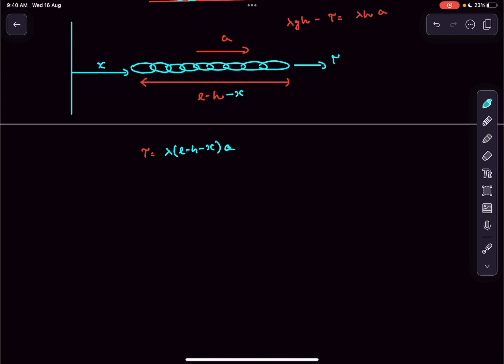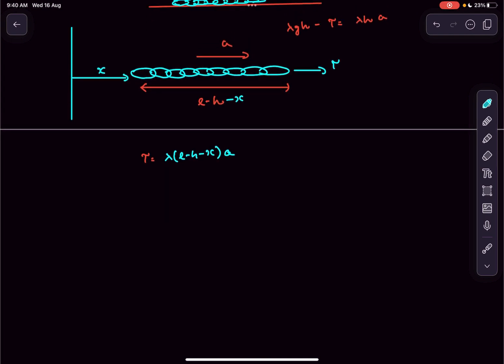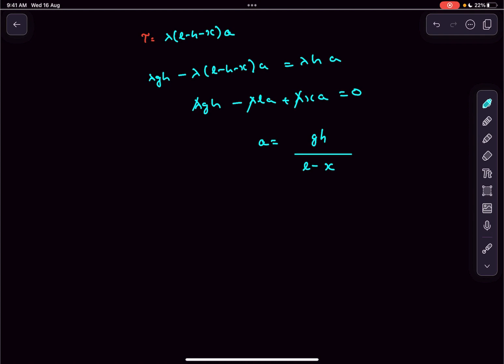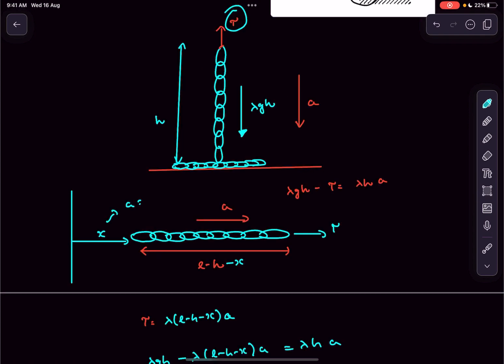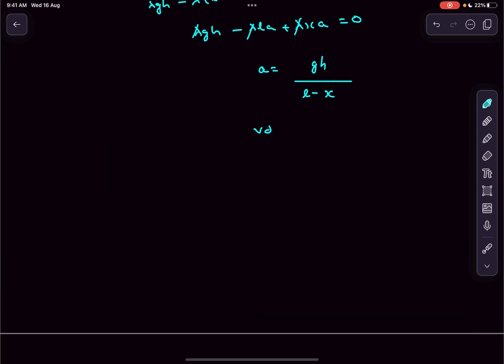We don't care about the tension, so we eliminate it by adding these two equations. Acceleration comes out as a function of x. We know a = d²x/dt², the double derivative of x. We can write a as v(dv/dx), and separate dx to the other side.